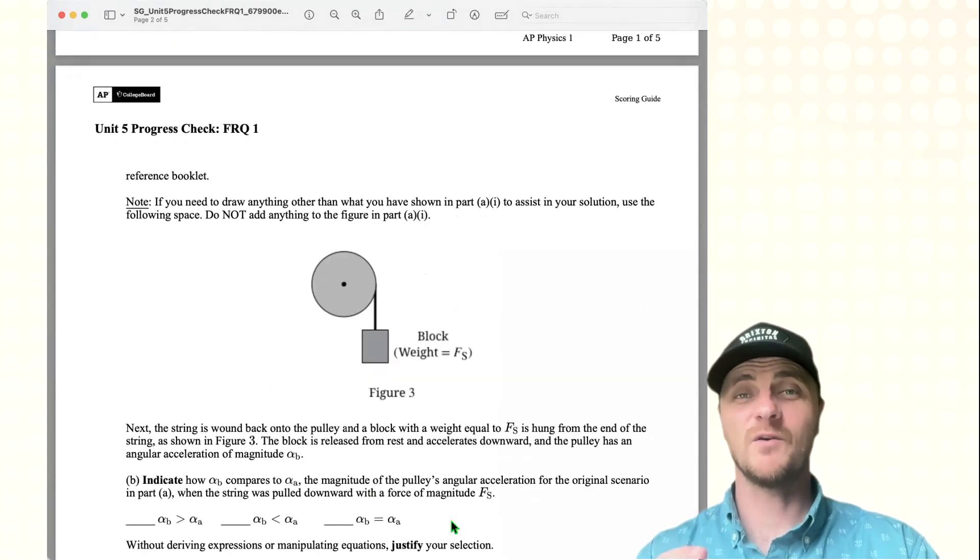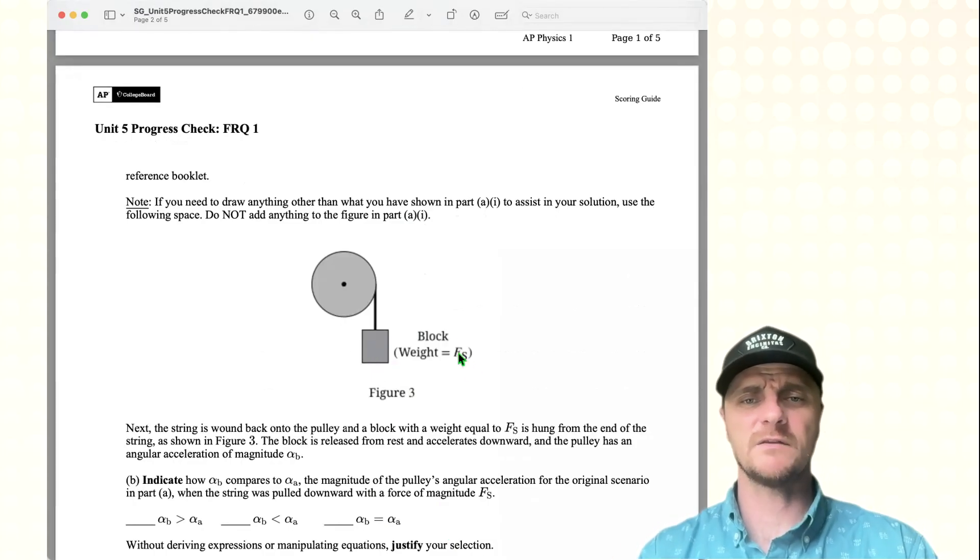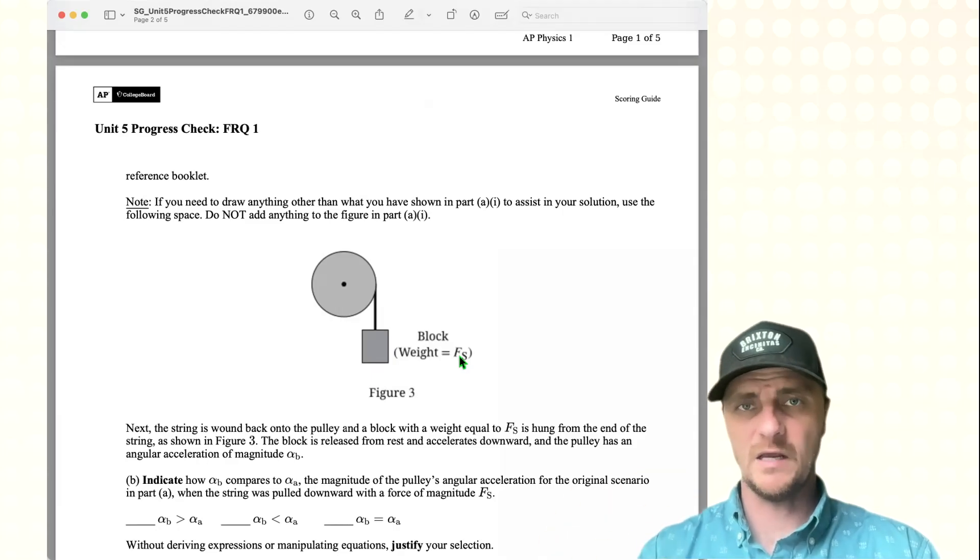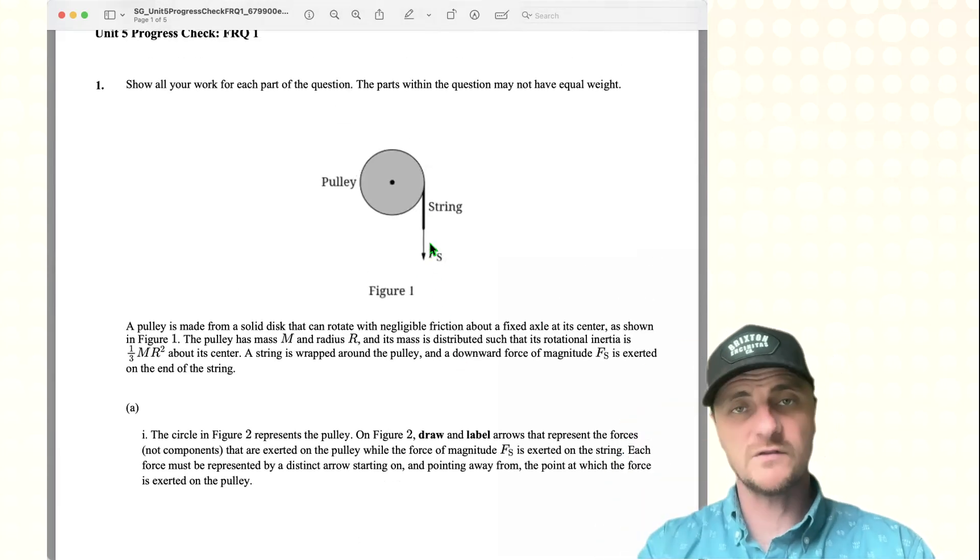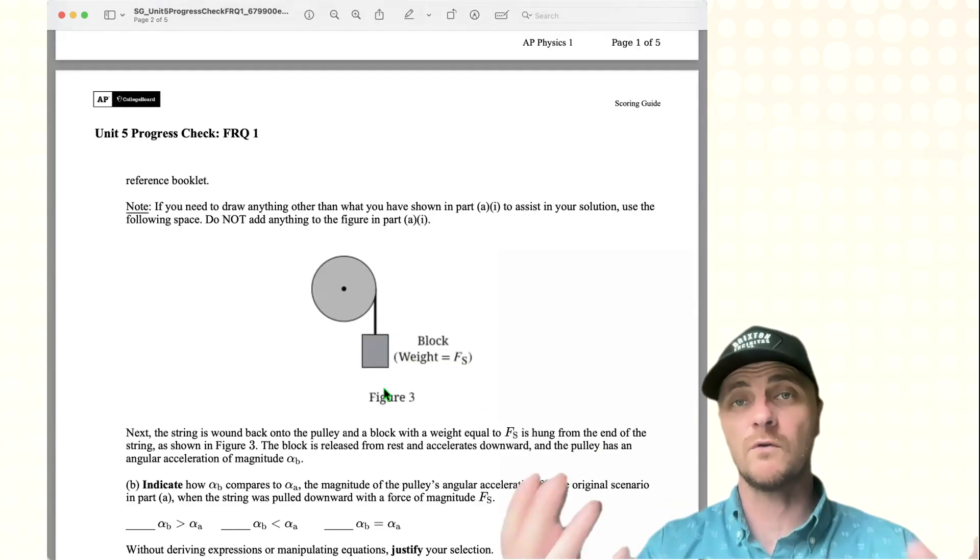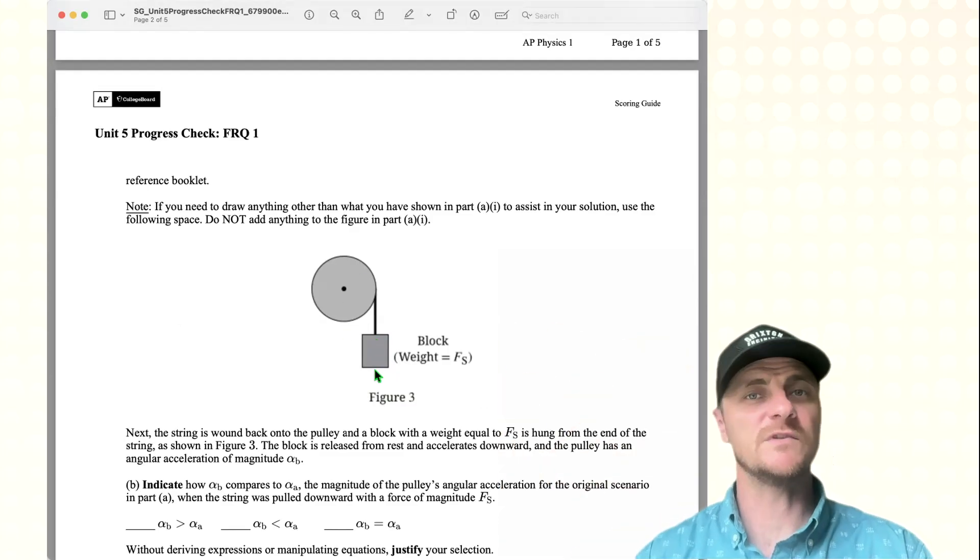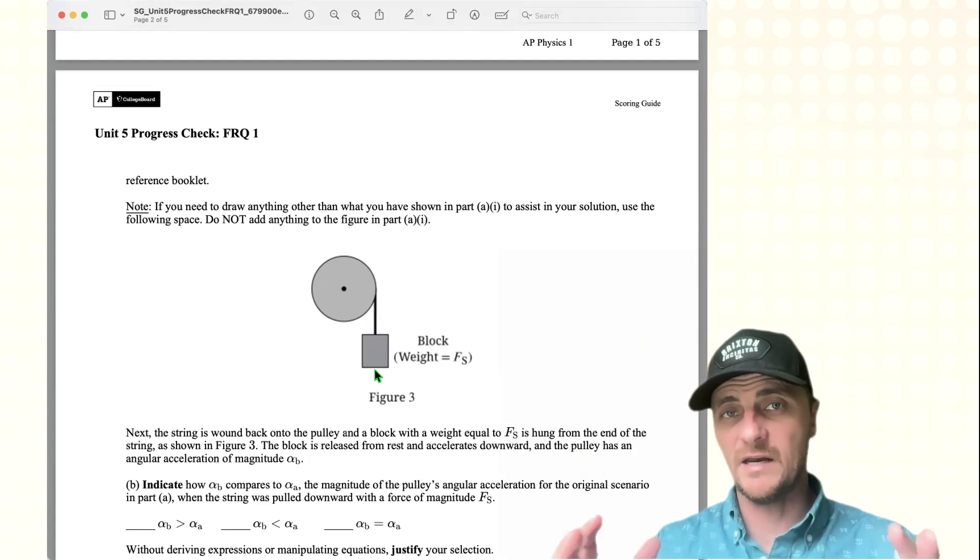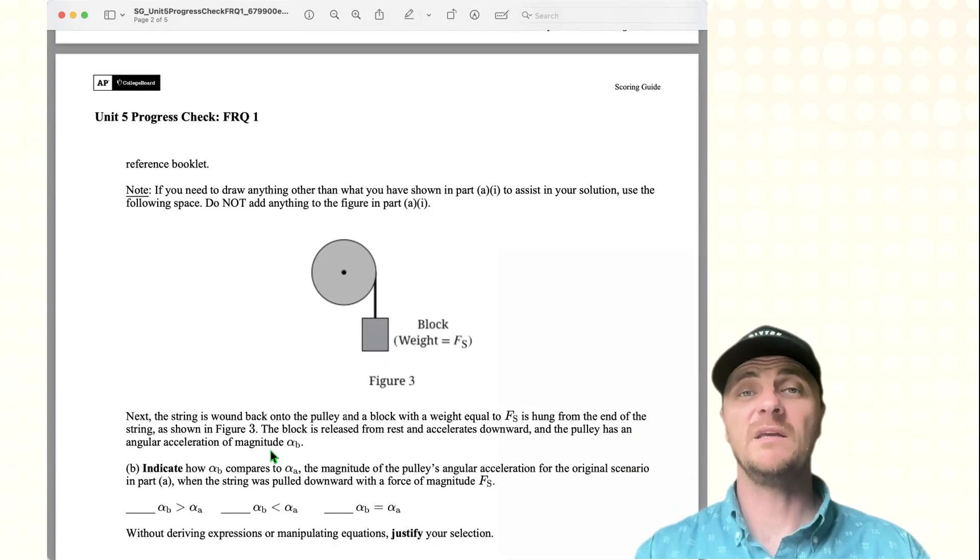Well, it would be tempting but incorrect to pick this last option, alpha B equals alpha A. And you might say, but the weight is the same exact force as the force I was pulling with in part A. So why isn't it the same angular acceleration? Well, in this old system, it was just you pulling with FS, and that was it. You were creating this downward tension in the string, and it was unfurling the pulley. But here, there's actually two forces. You have the weight, which would be the force of gravity, minus the upward tension that is created. So you actually have a reduction in your net force or your total combined force. So the total combined force unraveling this system is actually less than the previous system when it was just FS. Did you follow all that? So I'm going to say it in a nice clean statement. Get ready to write. So choose this middle option first off, and here comes the justification.